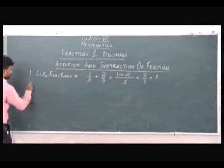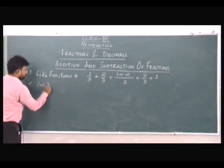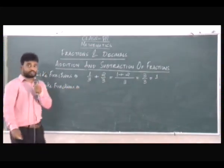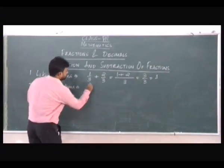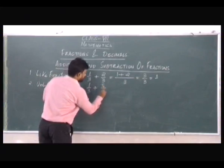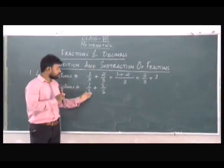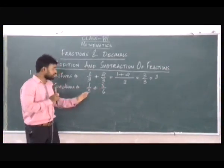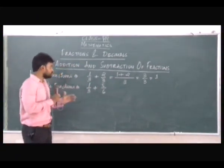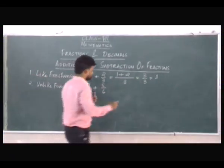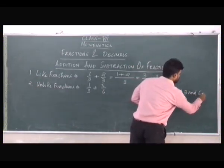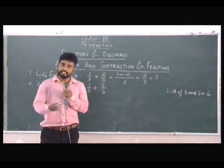Let's come to unlike fractions. In case of unlike fractions, for example, suppose you have 1 by 3 plus 5 by 6. Here we see that 3 and 6 are different numbers, so these two fractions have different denominators. In this case what we'll do is find out the LCM of 3 and 6, which gives us 6 as the answer.